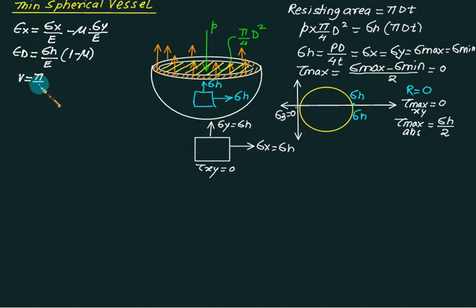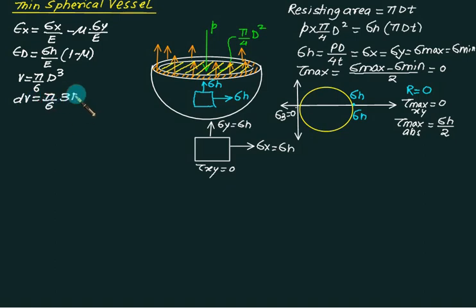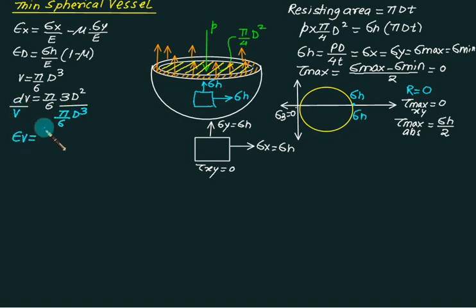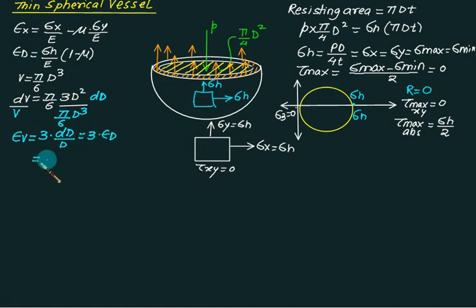Volume equals π/6 × D³ (since 4/3 × π × r³ = π/6 × D³). Partially differentiating, dV = π/6 × 3D² × dD. Dividing both sides by V = π/6 × D³, we get the volumetric strain ε_v = 3 × ε_d = 3 × σ_h / E × (1 − μ). Thank you very much.